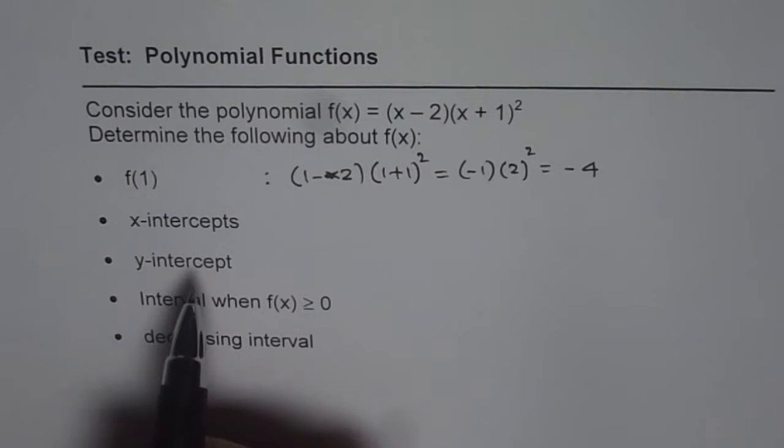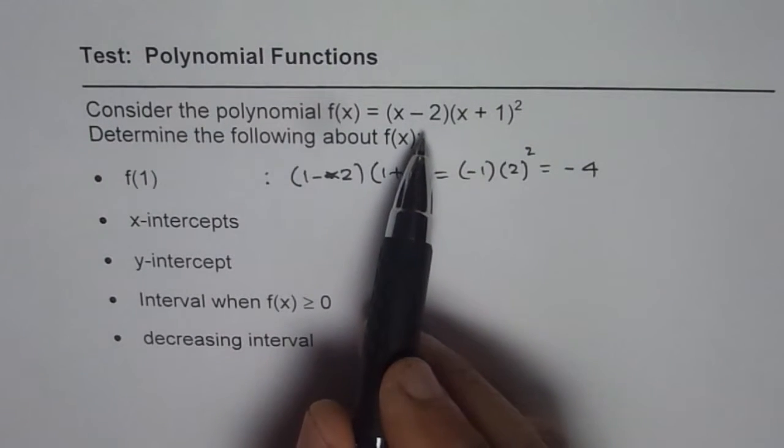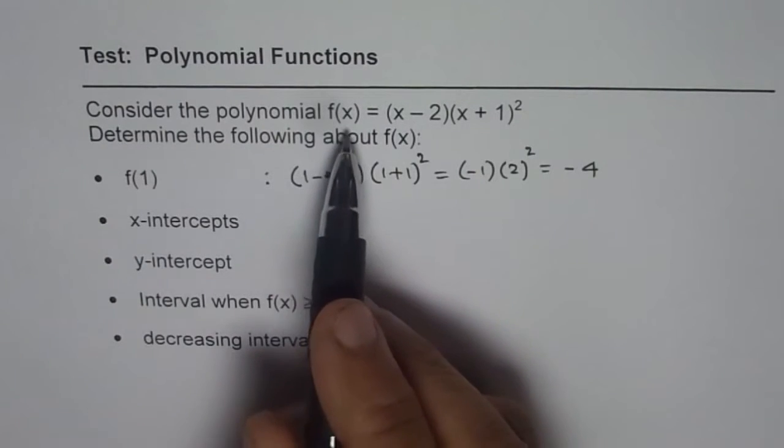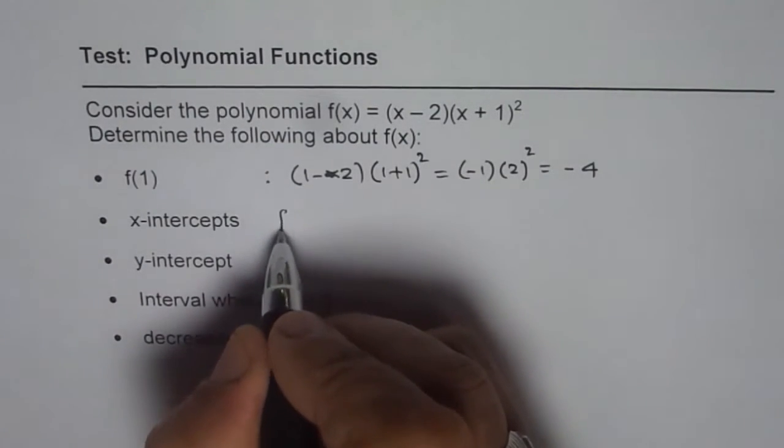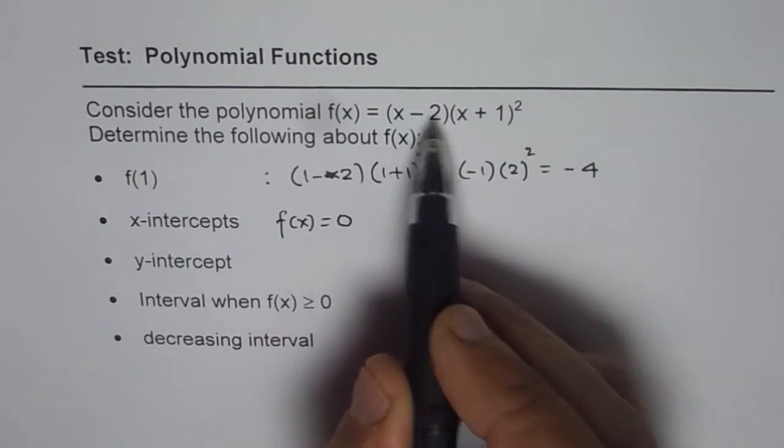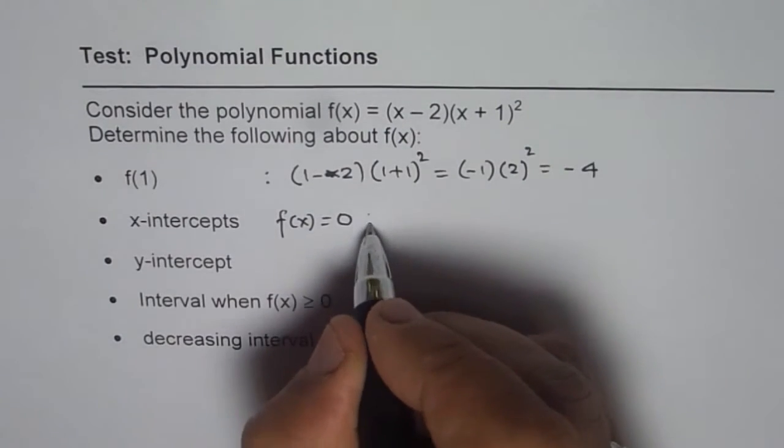x-intercepts. To find the x-intercepts we have to find the zeros. When is the function 0? So f(x) should be 0. So x-intercept really means that f(x) = 0. When you multiply factors, these could be zeros and that gives us the zeros.